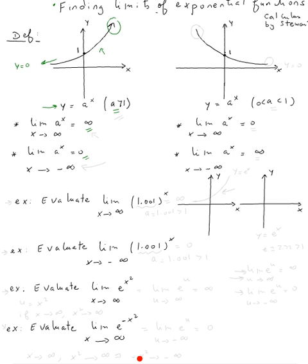On the other hand, the graph of y equals a to the x, if a is between 0 and 1, the limit as x goes to infinity is approaching y equals 0, so that's why we get 0. And as x approaches negative infinity, it's going up, which means positive infinity.